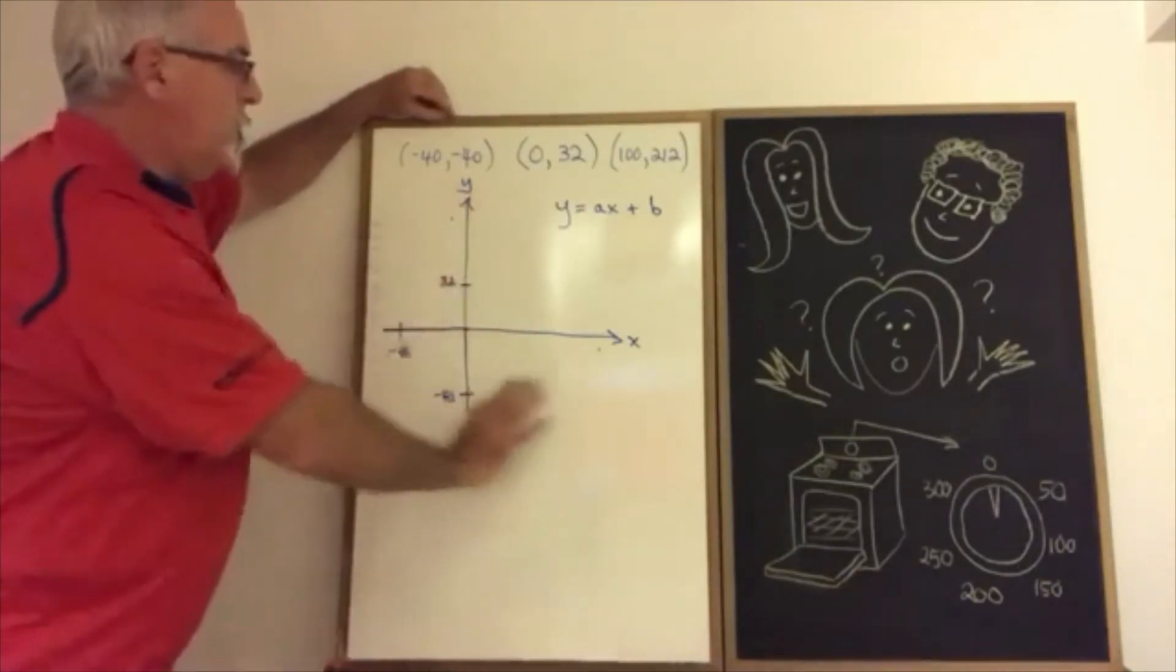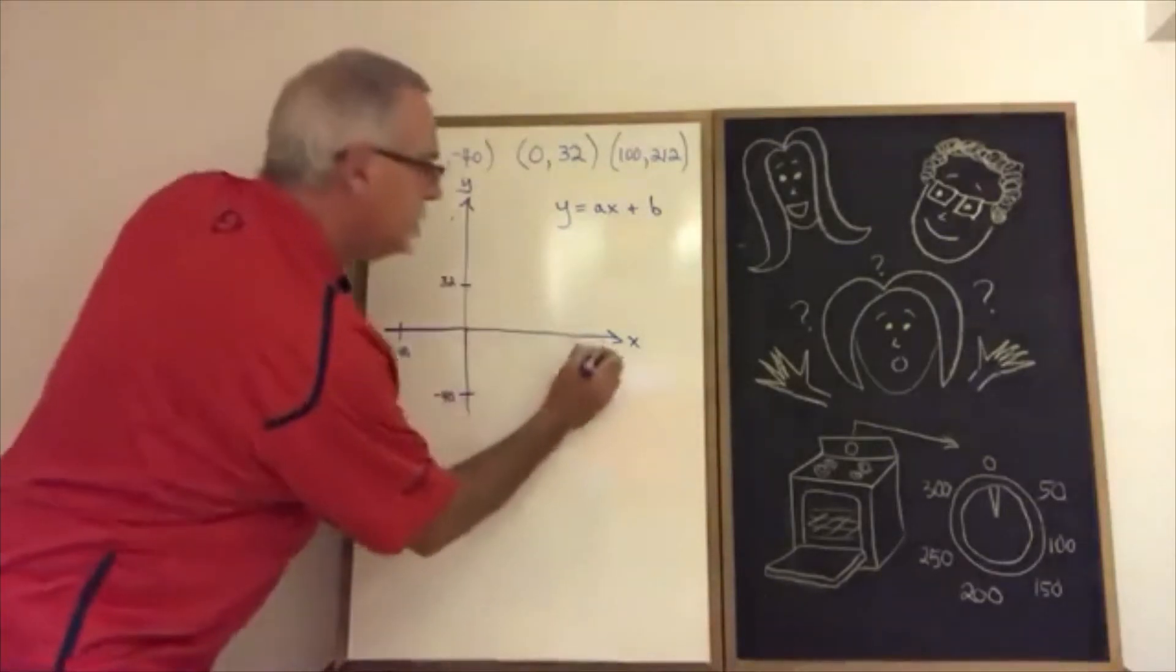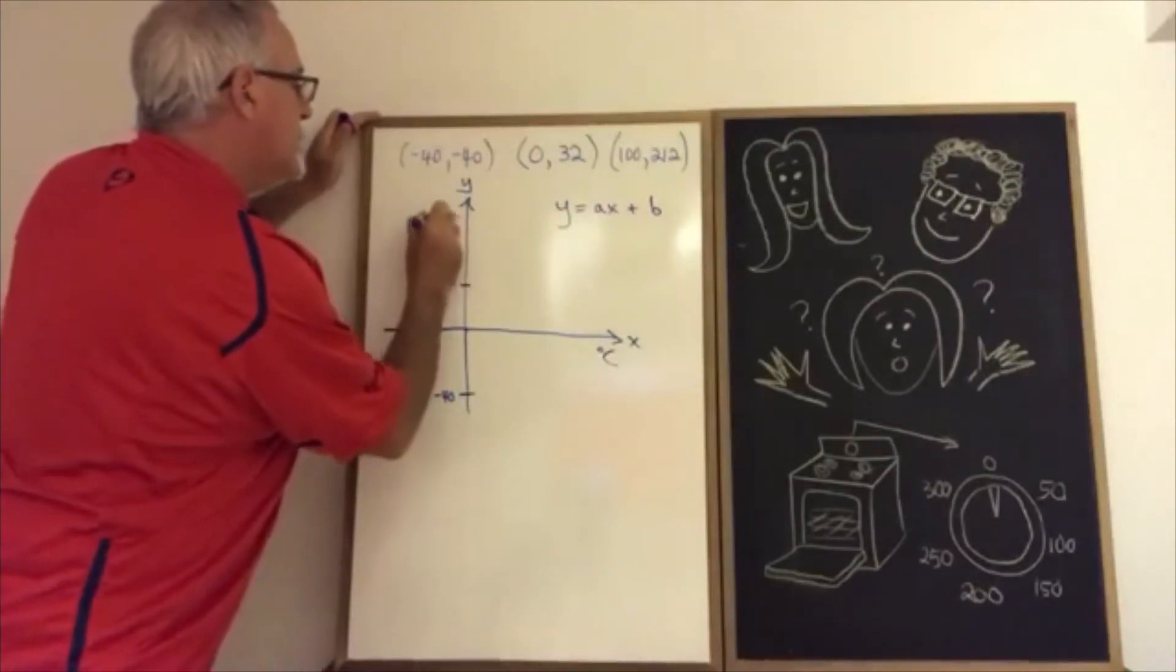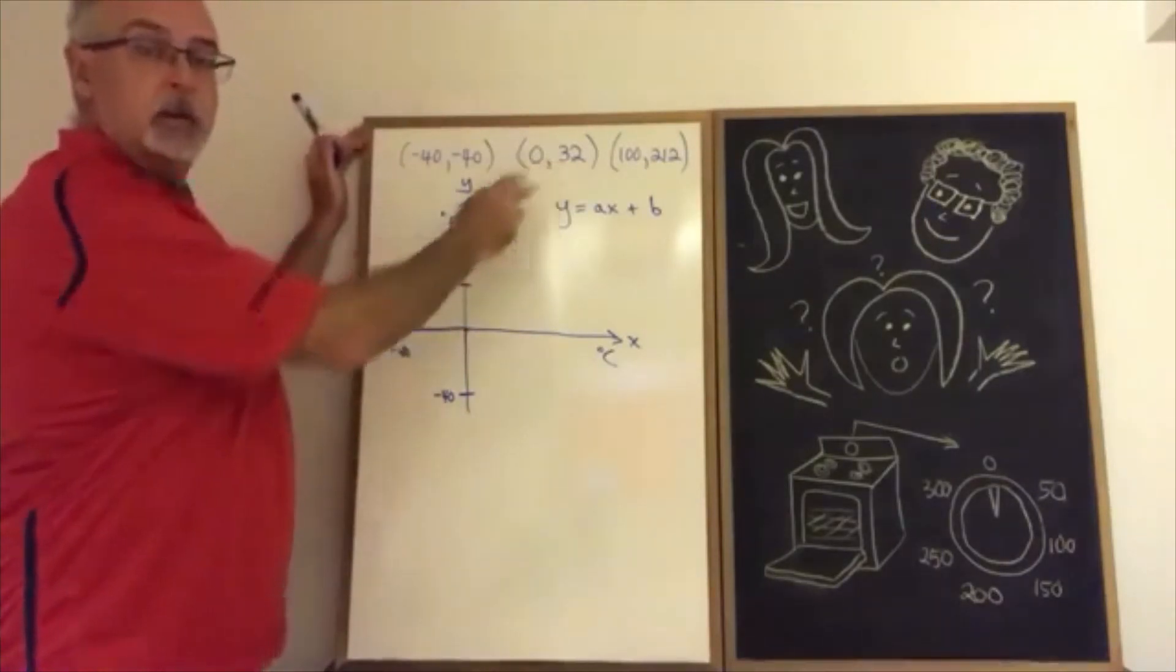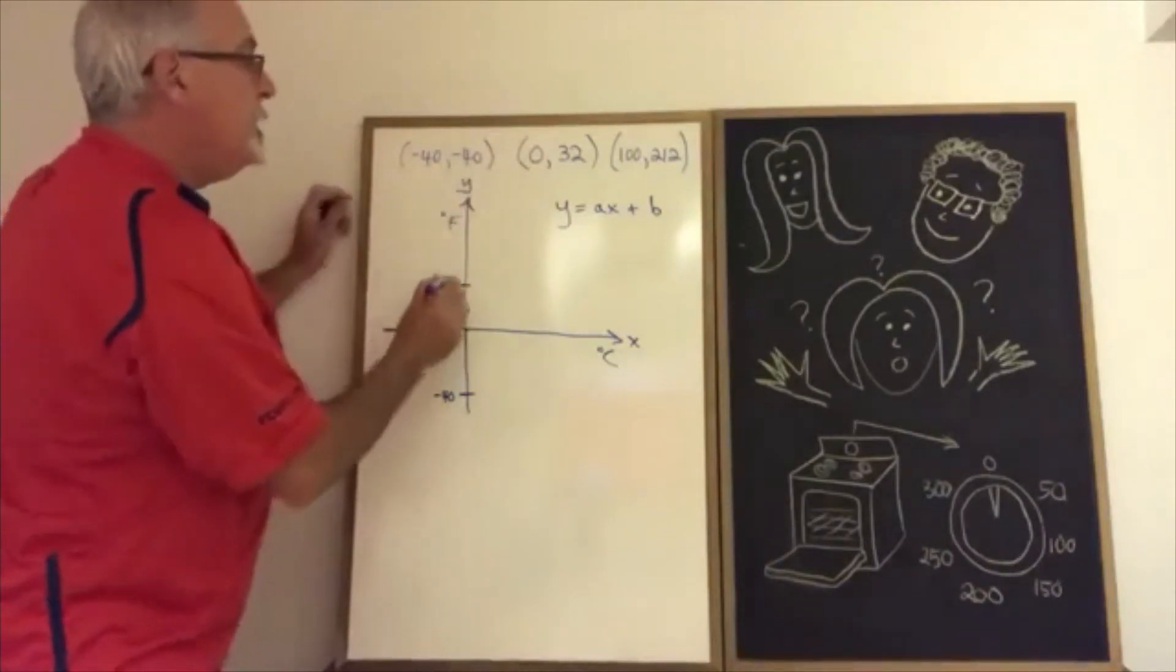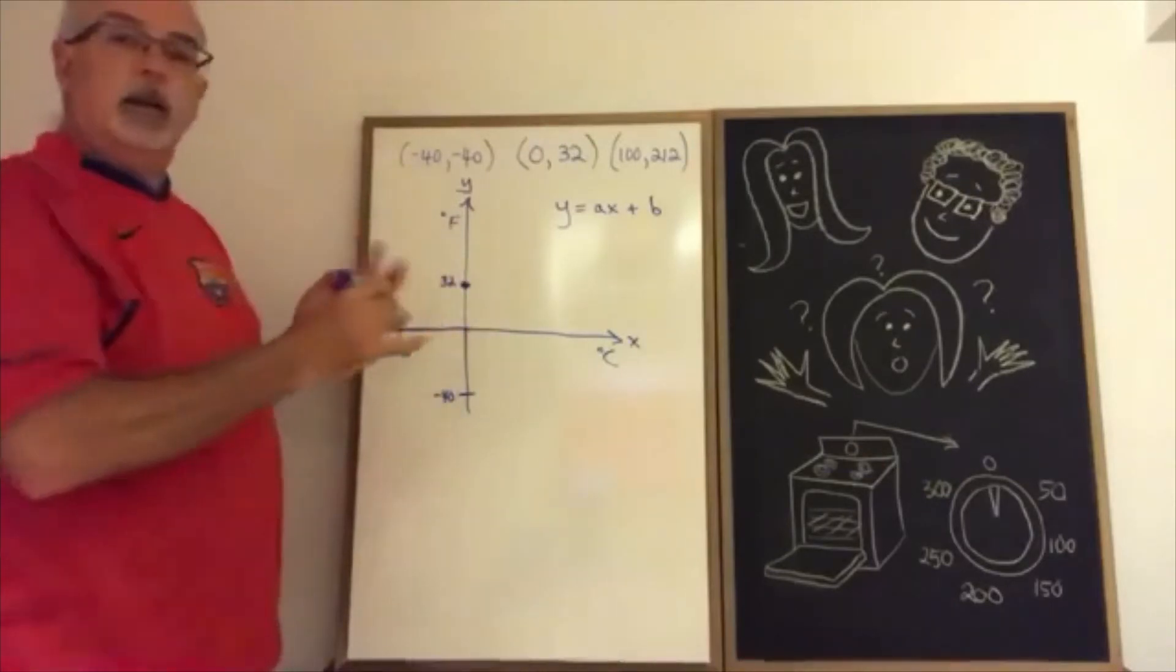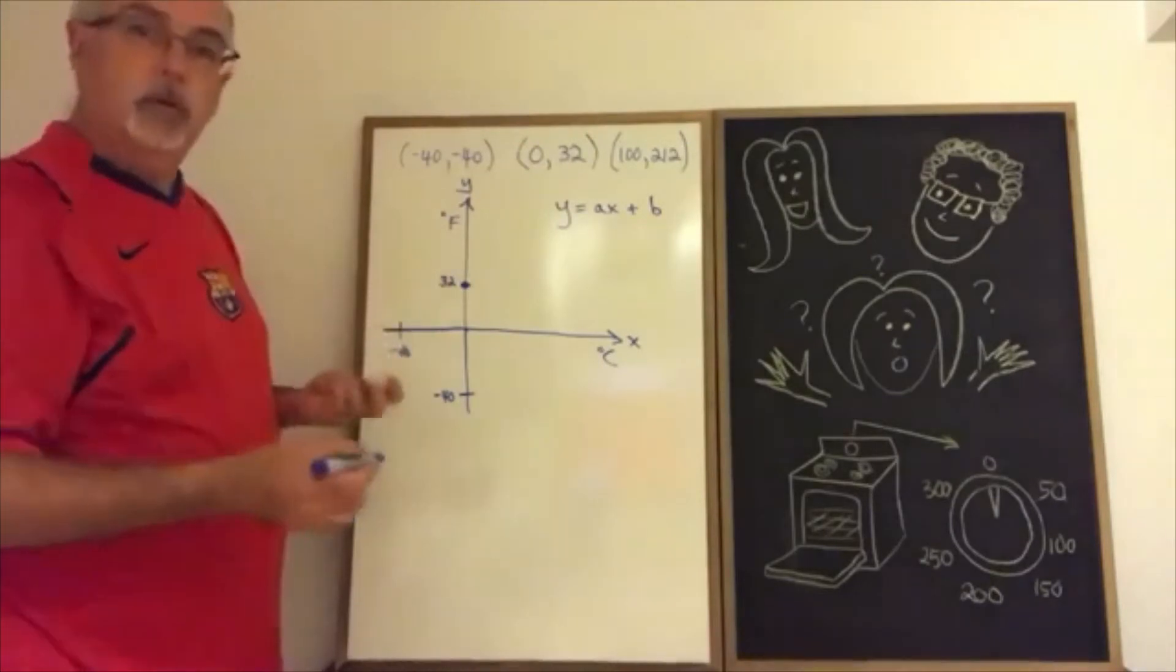Here's the coordinate plane. We're putting degrees Celsius on the x-axis and degrees Fahrenheit on the y-axis. I'm going to use the y-intercept as the first point: (0, 32) - zero Celsius, 32 Fahrenheit. That gives us a point right here. I'm not in a situation where I need all three points, so I'm just going to use two of them and the third one we will use to verify.